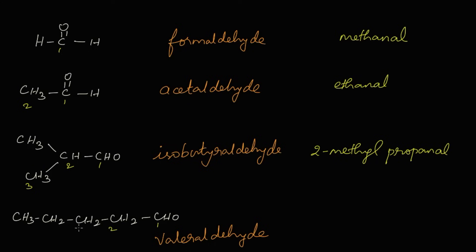For the fourth structure, counting gives five carbons — one, two, three, four, five — so the prefix is pentane. The functional group is CHO (aldehyde), so we replace 'e' with AL. Pentanal is the IUPAC name of valeraldehyde.